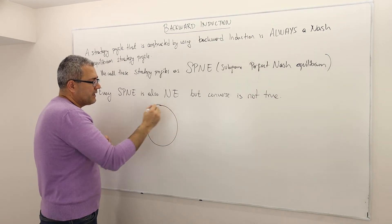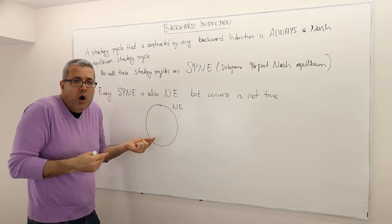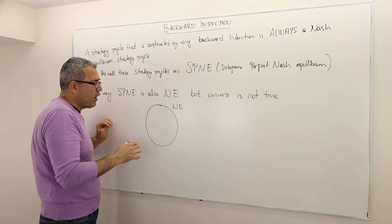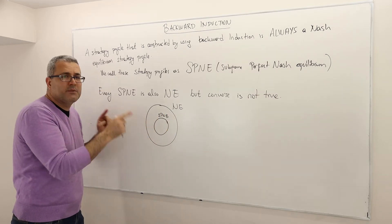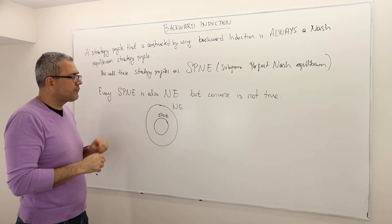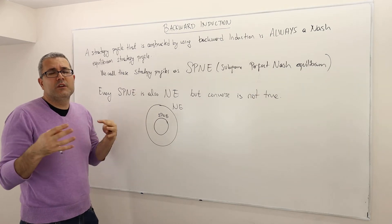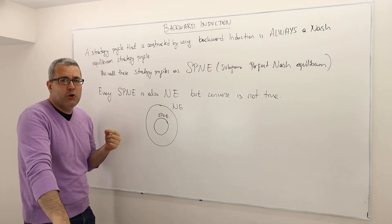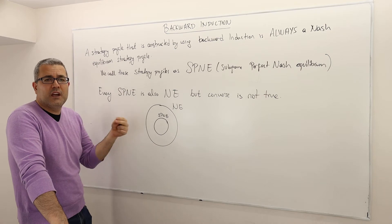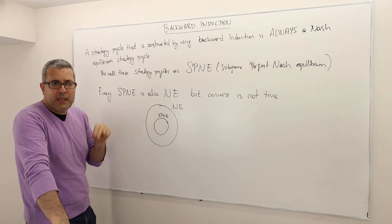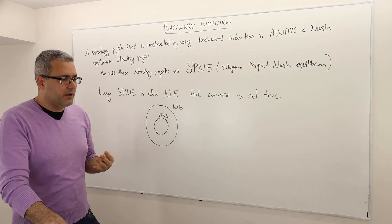In a game, the set of SPNE strategy profiles will always be a subset of the set of Nash equilibrium strategy profiles — whether there is one Nash equilibrium or infinitely many. Keep in mind this includes both pure and mixed strategies. For instance, a game might have no pure strategy Nash equilibrium but still have a mixed strategy Nash equilibrium.